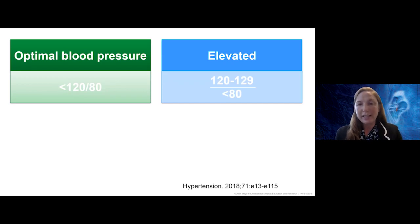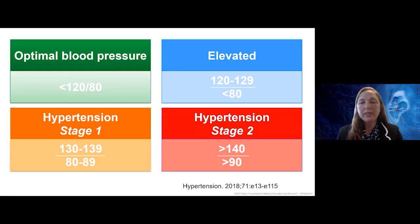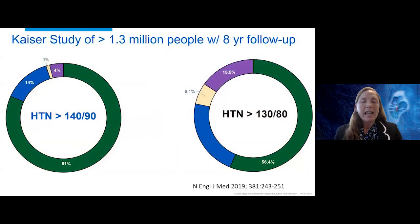Elevated blood pressure was defined as 120 to 129 — essentially in that 120 range. Stage one hypertension was redefined from the 140s down to the 130s, and stage two hypertension is 140 over 90. There was an interesting study done from Kaiser over a million individuals with eight years of follow-up, looking to see the impact of how you define hypertension.